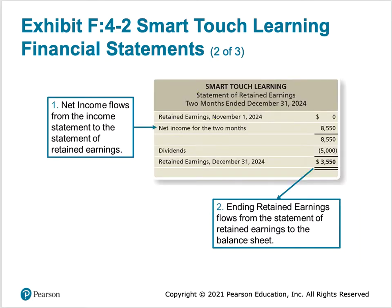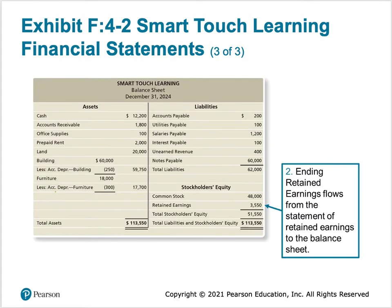The statement of retained earnings begins with the retained earnings beginning balance — in this case November 1st, which is zero because this business just started operations. If the business had been operating, we would pull this from the previous period. Then the net income for the two months, from the income statement, gives us a subtotal. Minus dividends gives us ending retained earnings as of December 31st, and that number flows to the balance sheet.